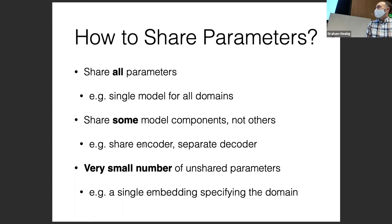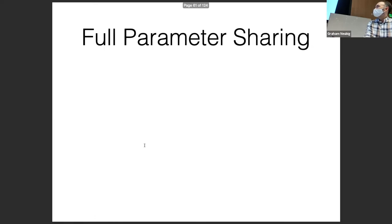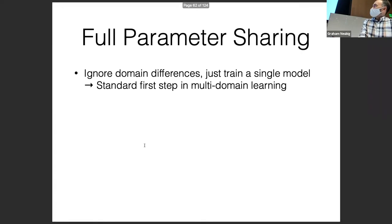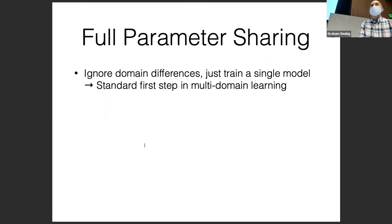Now moving on to the actual technical approaches — the first thing I'd like to talk about is parameter sharing methods. There are a number of ways to share parameters. One way is sharing all parameters, training a single model for all domains or languages. Another is sharing some model components but not others — for example, sharing an encoder but having a separate decoder. Another option is to have a very small number of unshared parameters, such as a single embedding specifying the domain.